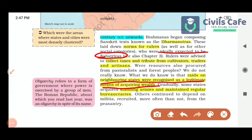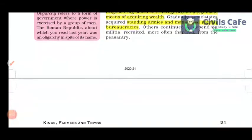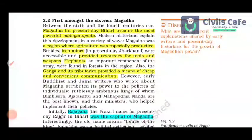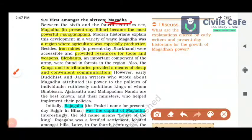Gradually, some states acquired standing armies and maintained regular bureaucracies. The first among the 16 was Magadha — the most important Mahajanapada. It became the most powerful because agriculture was especially productive due to the fertile land of the Ganga plains.